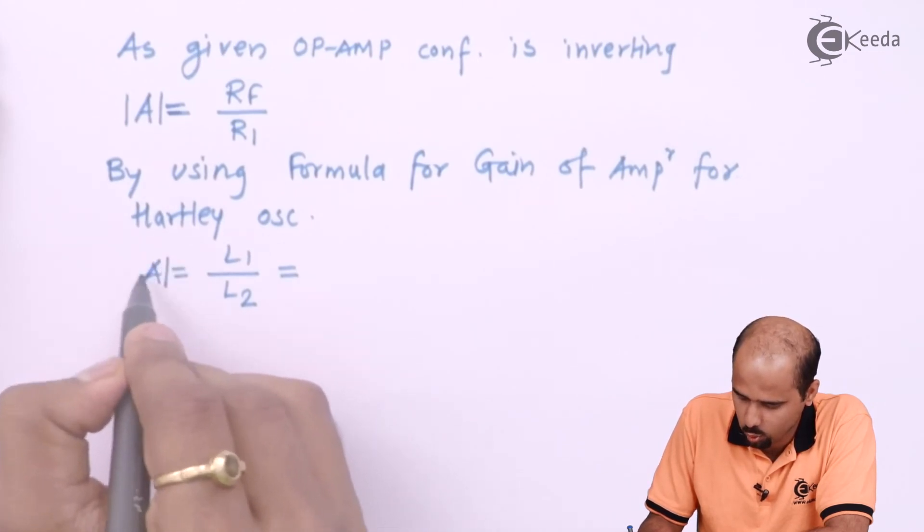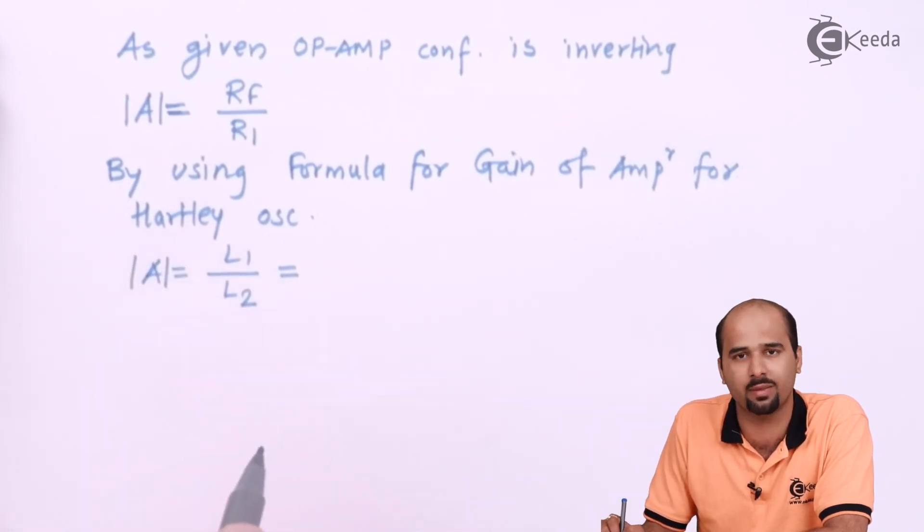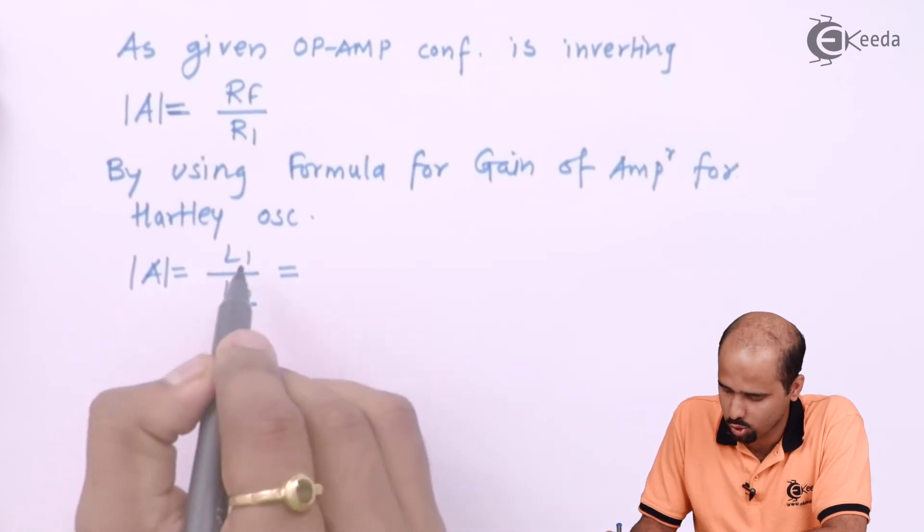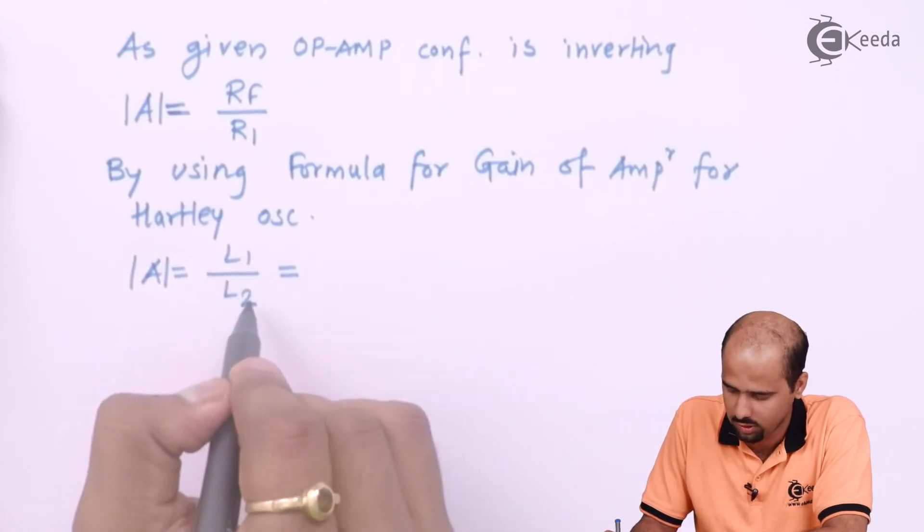I know that now what is the value of L1 divided by L2, right? So L1, you have to find out, L2, L1 and L2,